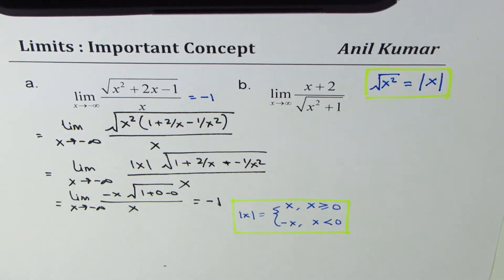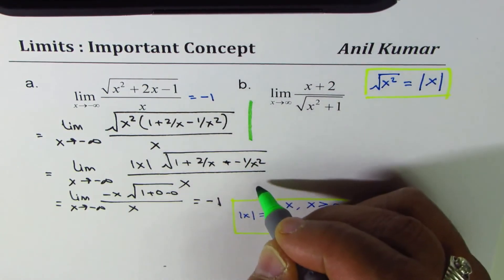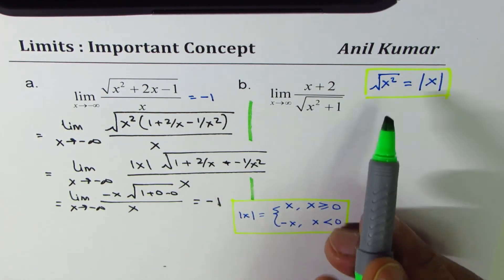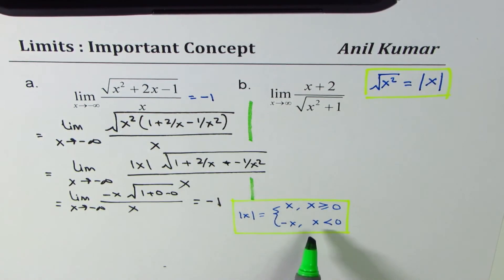Now, I hope that this solution helps you to understand the concept. So two important things which we have to take care of is square root of x squared is absolute x. And when x approaches minus infinity, the absolute value of x is minus x.